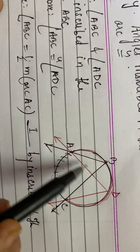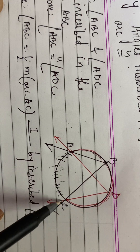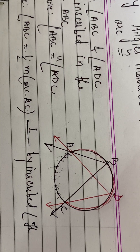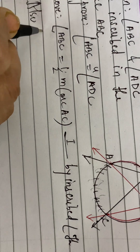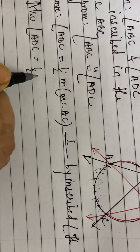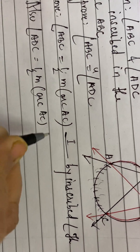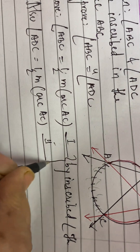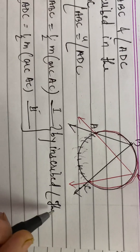Similarly, for angle A, D, C — angle A, D, C is intercepting arc A, C again. So we write: angle A, D, C is half of the measure of arc A, C. This is equation two. The reason is the same — by the inscribed angle theorem.